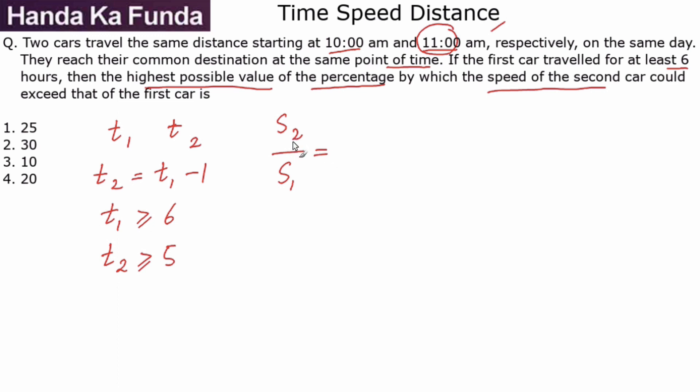So how much will this be? s₂ by s₁ will be t₁ by t₂ because speed and time are inversely proportional to each other. Now we know that t₂ is nothing else but t₁ minus 1, or in terms of t₂, t₁ is t₂ plus 1 divided by t₂, which is nothing else but 1 plus 1 by t₂.